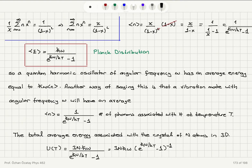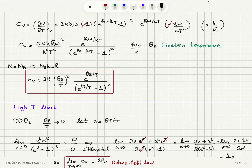The total average energy associated with a crystal of N atoms in three dimensions: this was for one quantum harmonic oscillator. If we have 3N of them, the total energy is 3NℏωE · (e^(ℏω/kT) − 1)⁻¹. That is the total energy at temperature T.